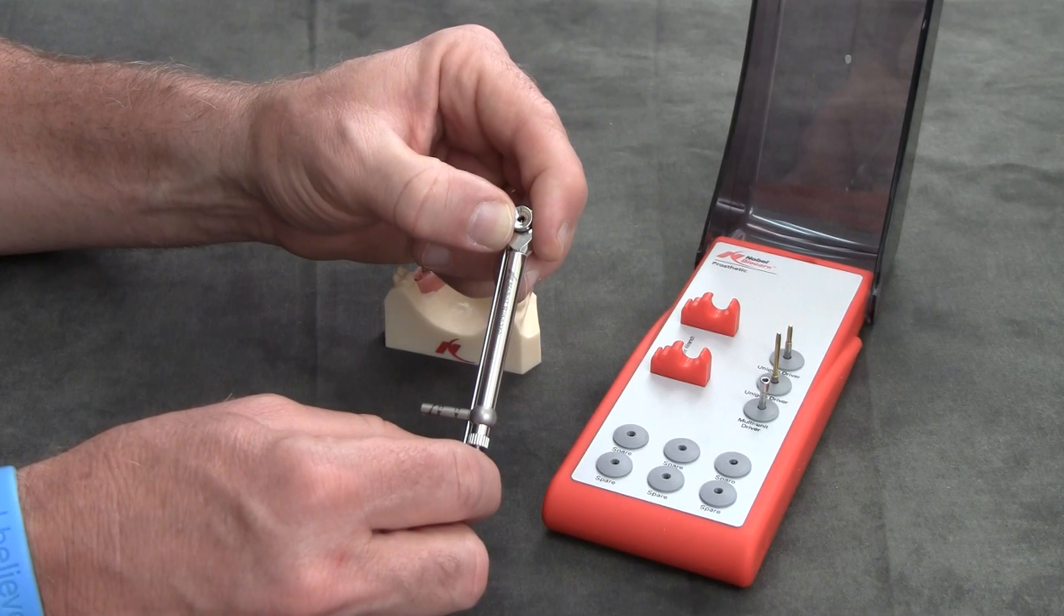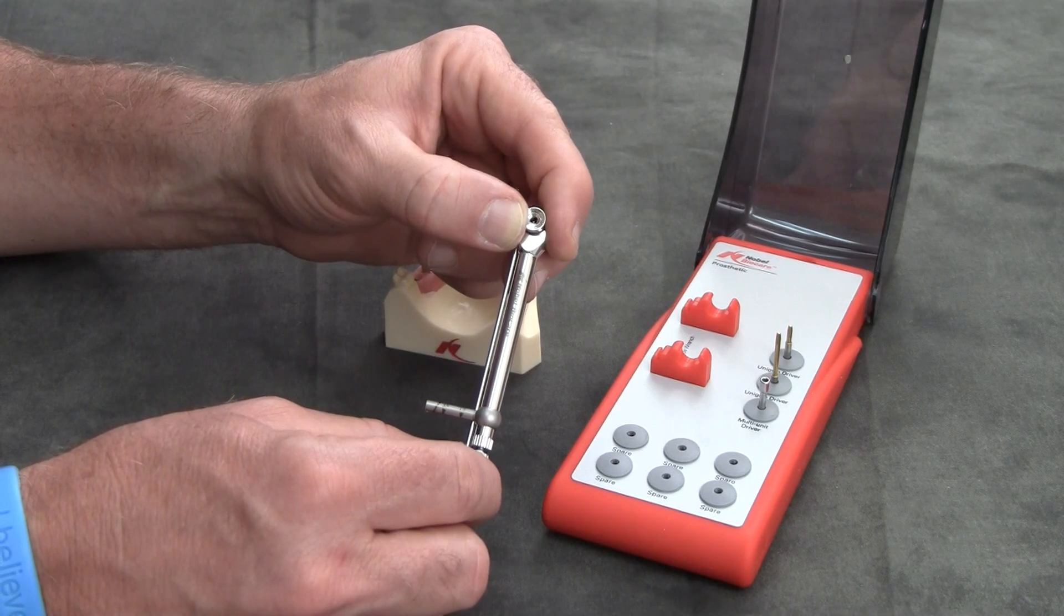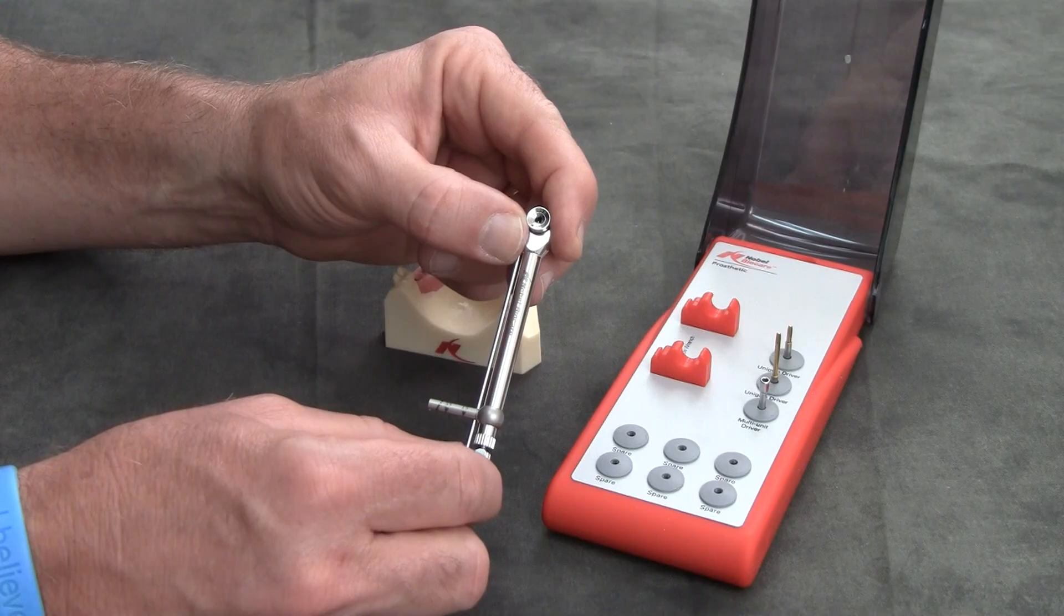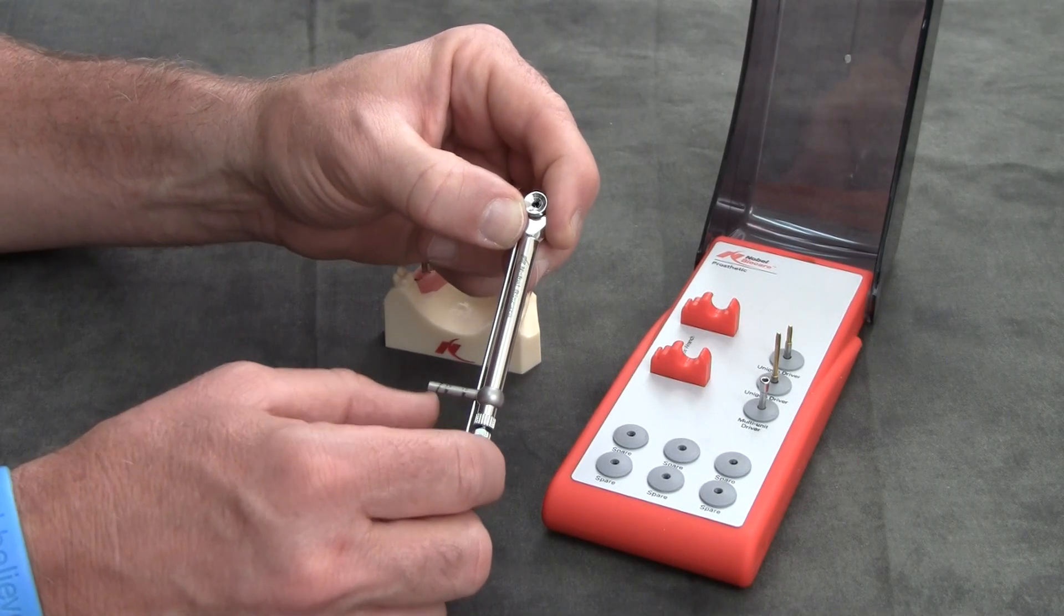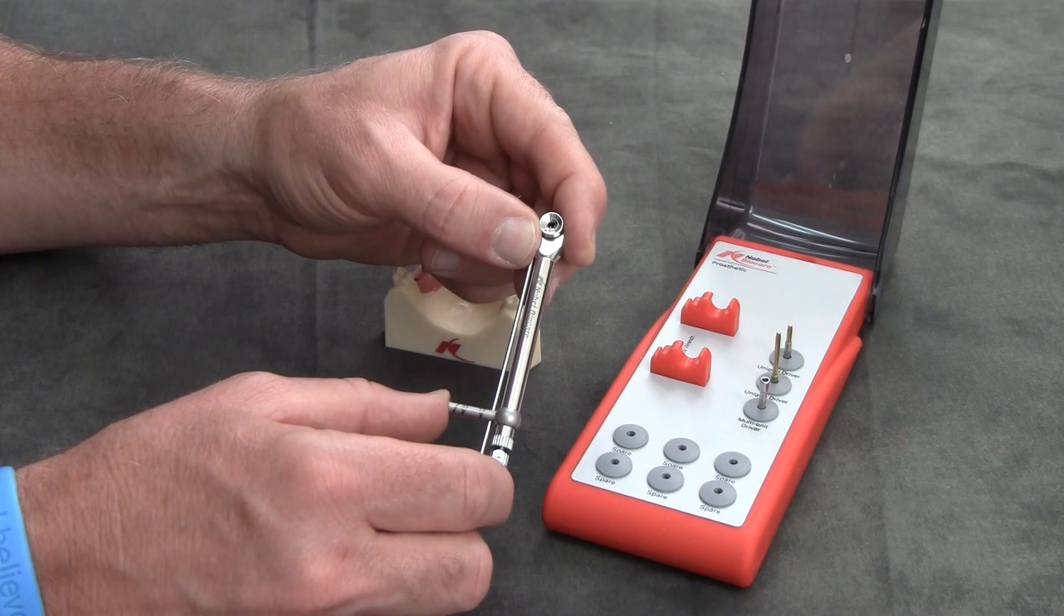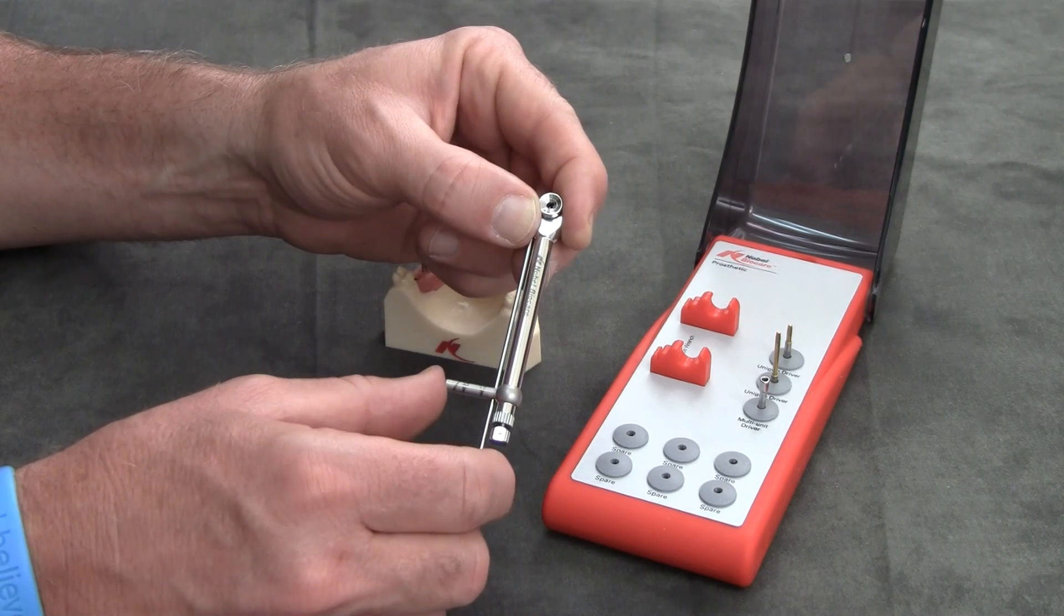You can either over tighten and strip a screw or under tighten and have a loose fitting restoration, which can really lead to a rough day at the office trying to get to that screw. It's best to utilize the torque wrench.